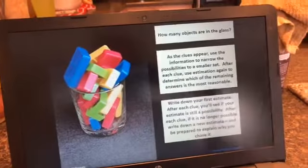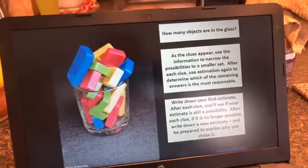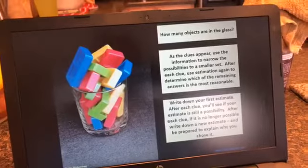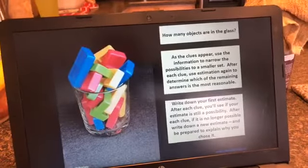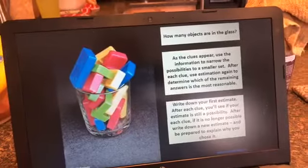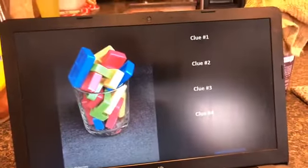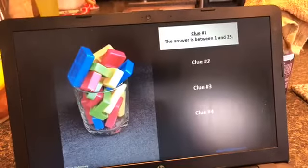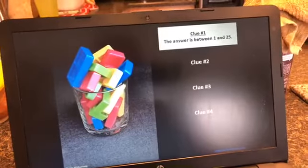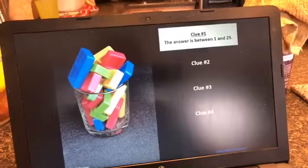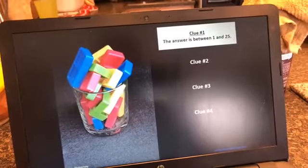You're going to write down your first estimate, and then after the next clue, you'll see if your estimate is still reasonable and so on and so forth. Our first clue is the answer is between 1 and 25. We have between 1 and 25 bricks or dominoes in here.